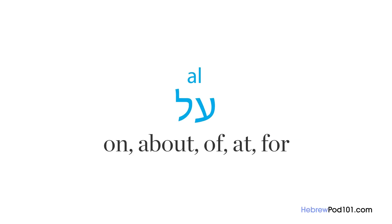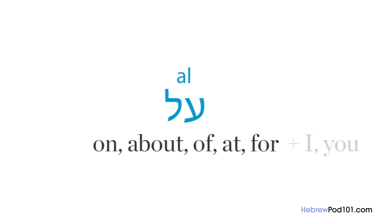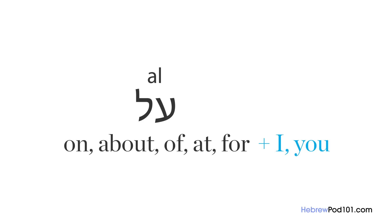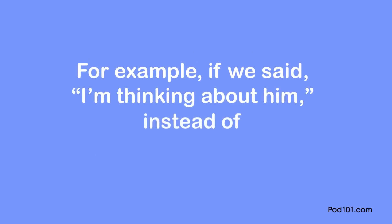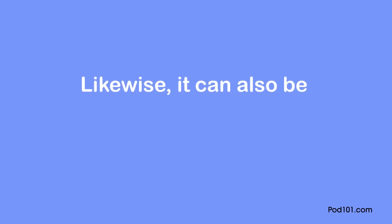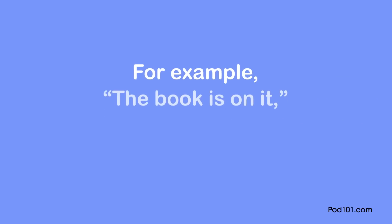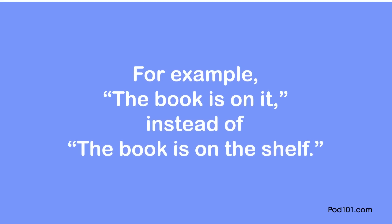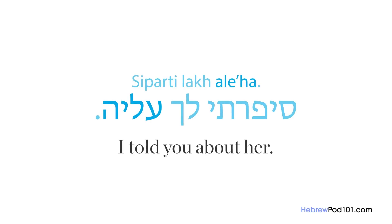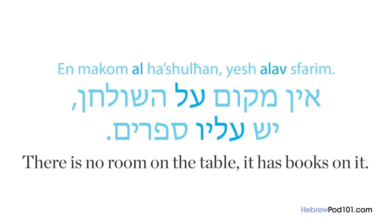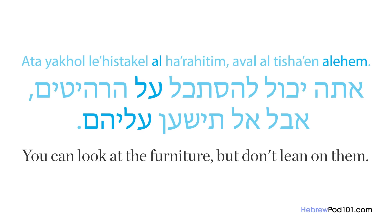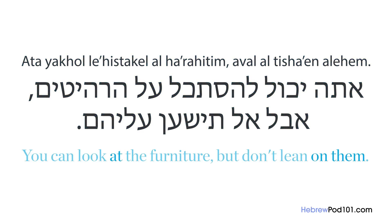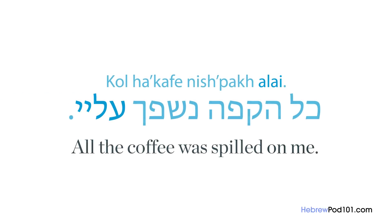The word 'al' is also used as 'at' to indicate direction: 'tistakel al ha'ish hazeh' — look at that man. It can also be used as 'for' to indicate purpose: 'toda al hamatana' — thank you for the present; 'hu ne'enash al hapesha shebiza' — he was punished for the crime he committed. The word 'al' can also be conjugated by combining it with pronouns — for example, 'there is no room on the table, it has books on it,' or 'you can look at the furniture but don't lean on them.'